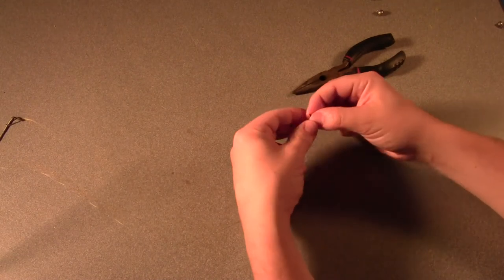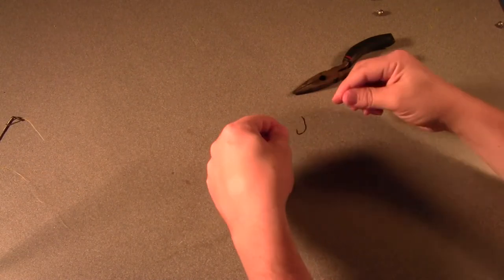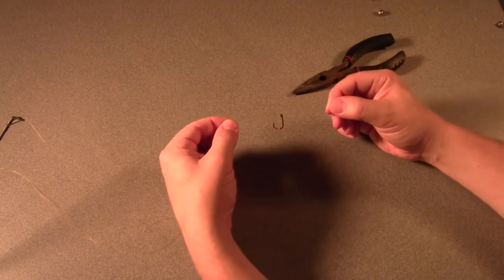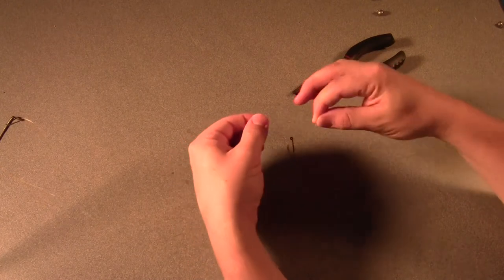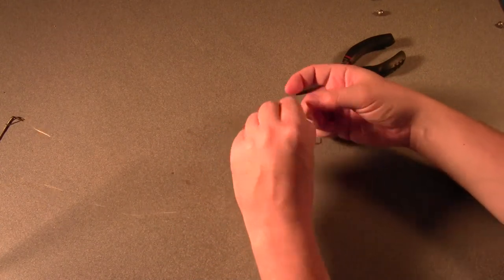And basically what I'm going to do here is tie the hook on with a polymer knot. To do that, I just treat both of these strands as if they're one line, and I tie an overhand knot here.